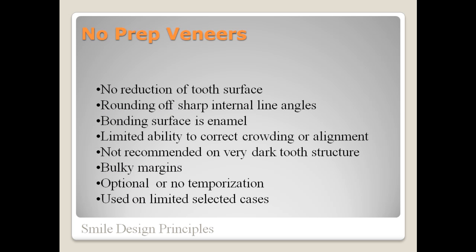No prep veneers are heavily advertised for their appeal to the public, since nobody likes to have their teeth drilled or reduced for dental work. So there is very little reduction of tooth structure — you may round off sharp corners or line angles, but basically very little preparation. The bond strength is excellent since you are bonding to enamel. This limits the amount of things you can do, such as correcting moderate to severe crowding. You are unable to properly mask very dark or discolored teeth, and it may be difficult to hide all the margins, which can be a little bulkier.